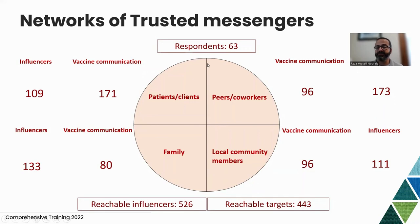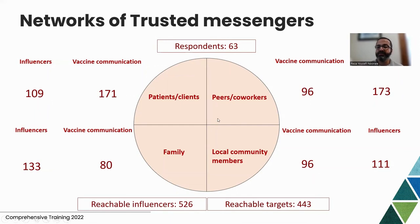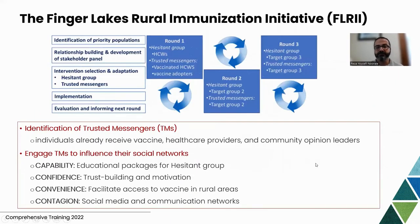We asked healthcare trusted messengers in a small community survey about people they talked with about getting COVID-19 vaccine in the last couple of weeks. The 63 participants talked with more than 400 patients and clients about getting COVID-19 vaccine, and were aware of more than 500 other trusted messengers they could share information with. Any intervention implemented with a small group of people can spread much further through cascades of social influence.